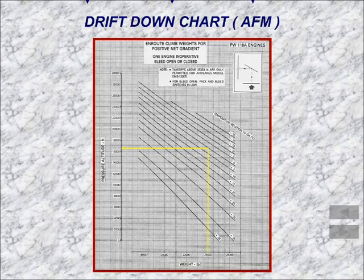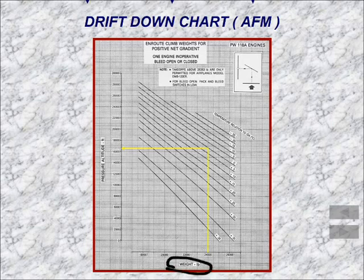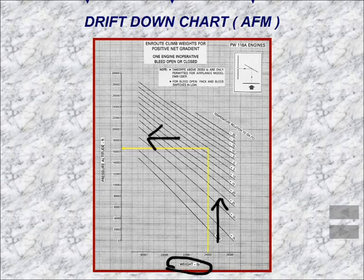With our drift down chart, you can take a look — this is for an Embraer 120. For this airplane, the weight is shown down here in pounds. For this flight, it's at 24,000 pounds. If we look at the temperature of zero degrees, reading up this line here and then reading over, we can see that the airplane is going to level off at a pressure altitude of right around 16,800 feet.